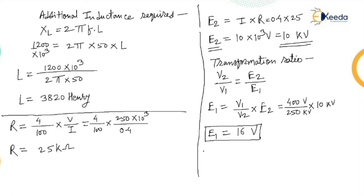One more quantity: input power P_in = (E1 / V1) × kVA capacity = (16 / 400) × 100 kVA = 4 kilowatt. So the input power is 4 kilowatt. This is the complete approach for solving resonant transformer numericals. Hope you understood — thank you very much, we'll meet again with the next numerical.